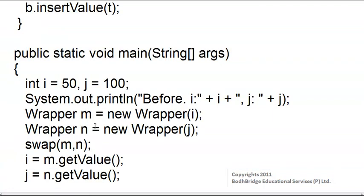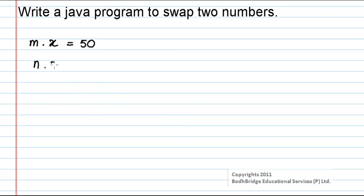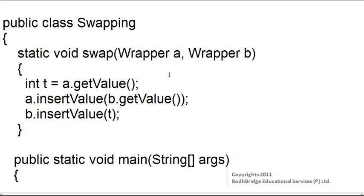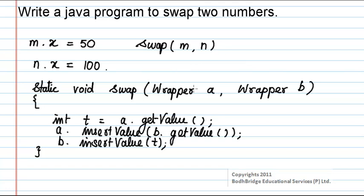Another object is created for the wrapper class with variable j passed in the constructor argument. So for object n, the value of j is assigned to x — that is n.x will be equal to 100. Now we swap the values of m and n by calling the swap function, passing the wrapped values of i and j. Within the swap method, m is passed in the place of a and n in the place of b.